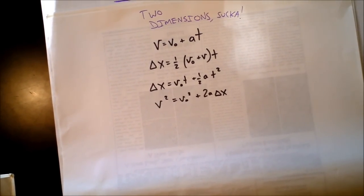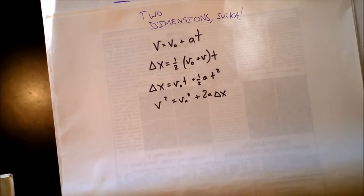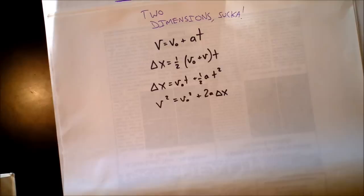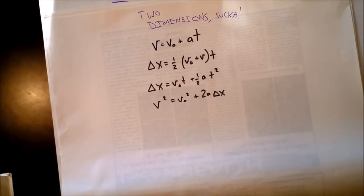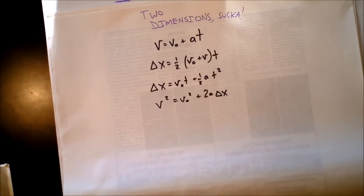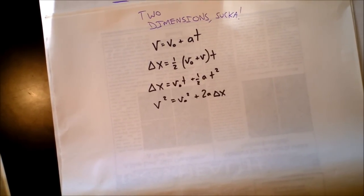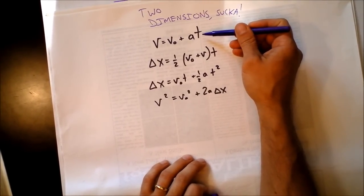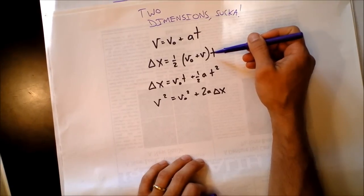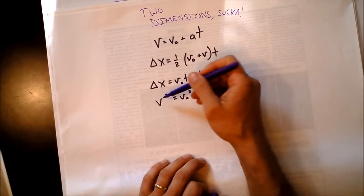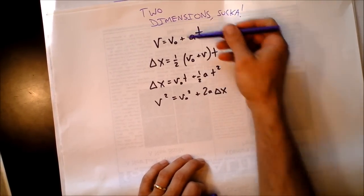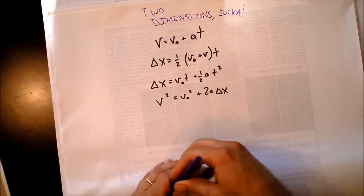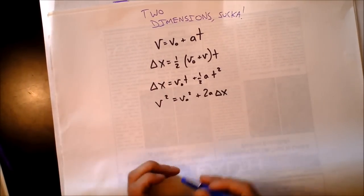This video is about projectile motion — motion in x and motion in y. We have four equations derived in the previous chapter: the definition of acceleration, the definition of average velocity, the classic, and the tale of two squares. These four kinematic equations are good in both the x direction and the y direction.